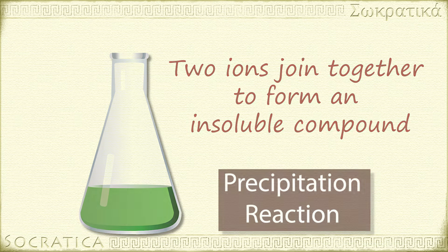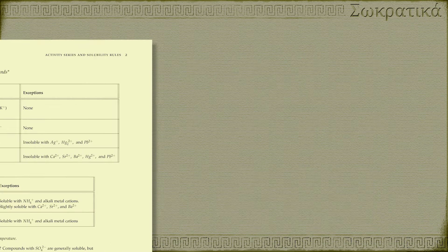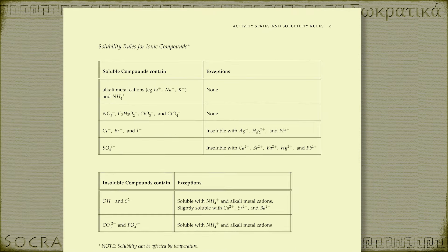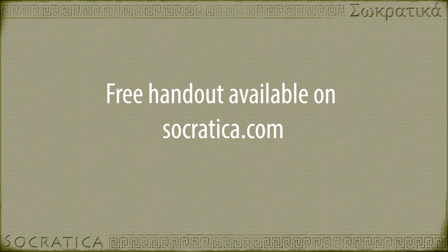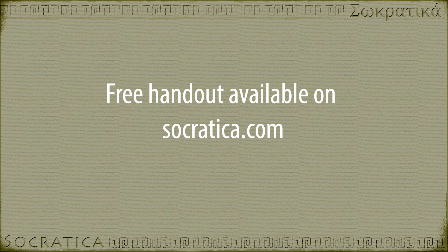How do you know if a precipitate is going to form? That's when you'll pull out your table of solubility rules. Again, you can find this in your textbook, but we've summarized the rules along with the metal activity series on a free handout you can find on our website, Socratica.com.